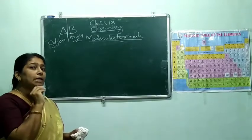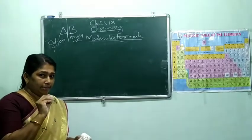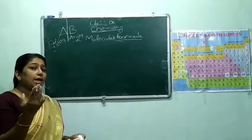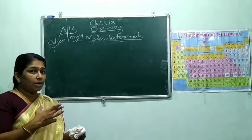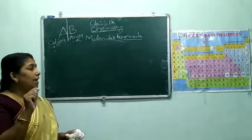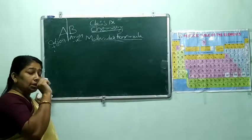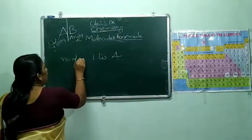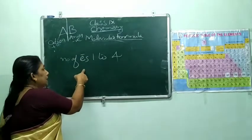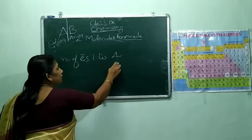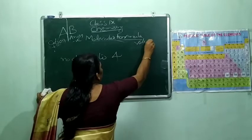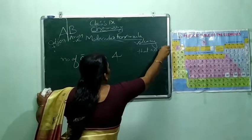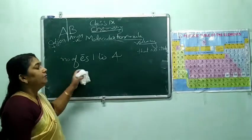What is valency? The combining capacity of an atom is known as valency. That means how many electrons are required for that atom to complete its octet. Here is a shortcut: if the number of electrons in the valence shell is one to four, the valency will be that number itself. For example, hydrogen — valency one. Lithium — electronic configuration K2, L1 — one electron in the valence shell, so valency is 1.